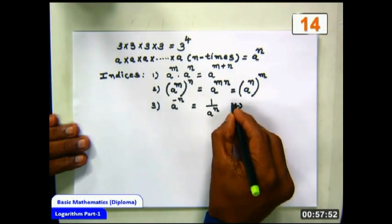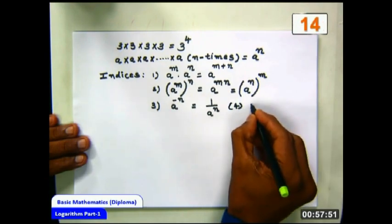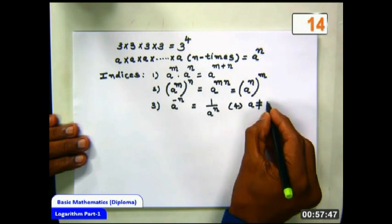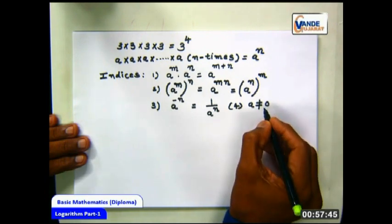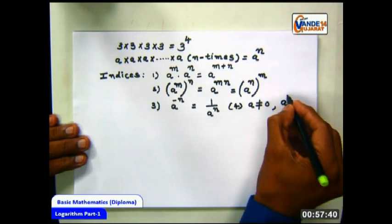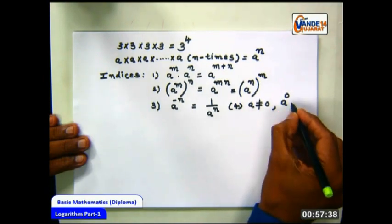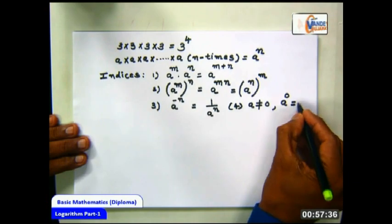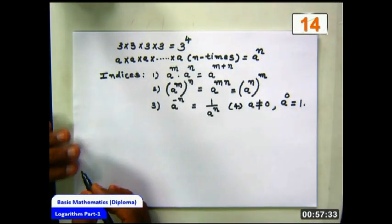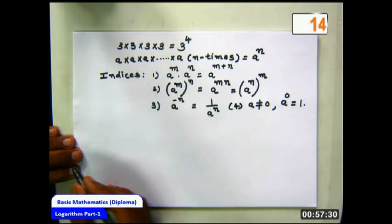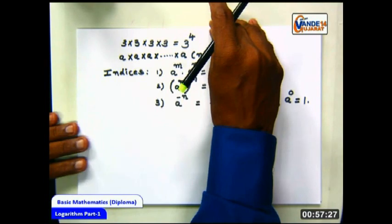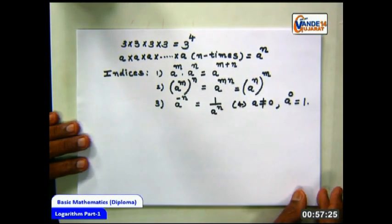Further, for any non-zero number A — A not equal to 0 — A to the power 0 is always 1, as we all know. So this is the beginning with indices.